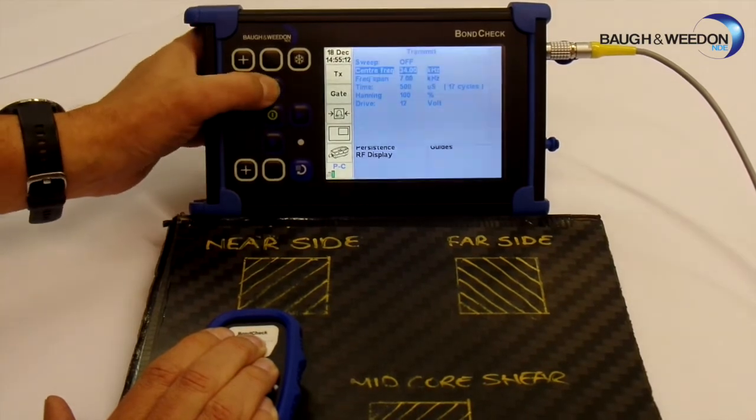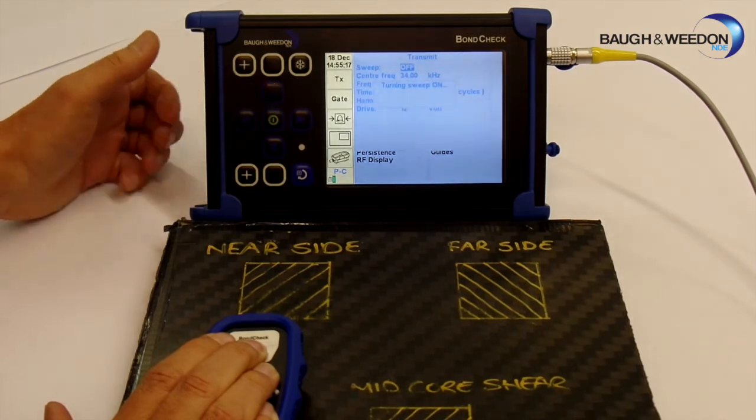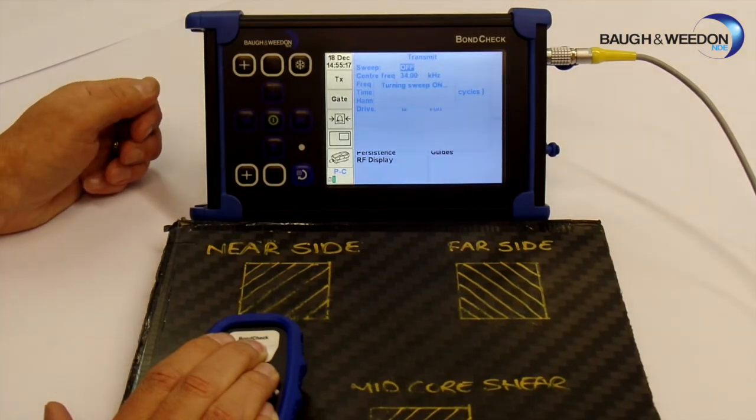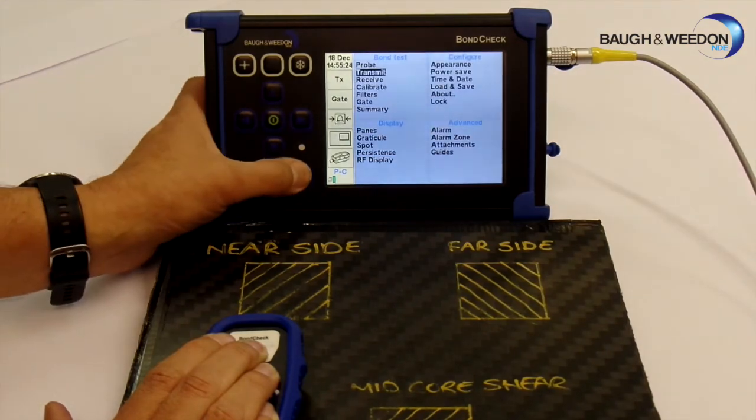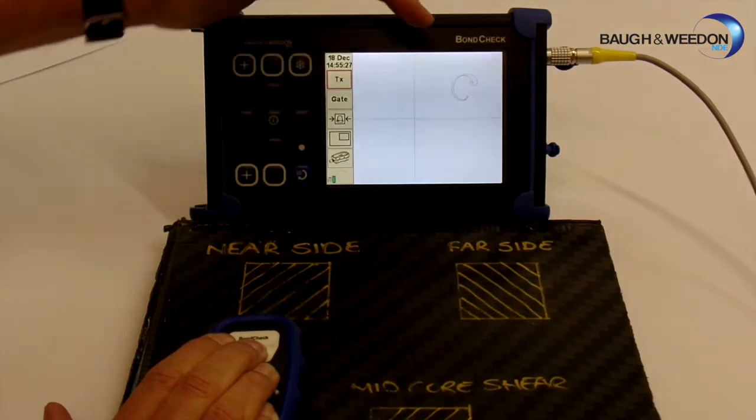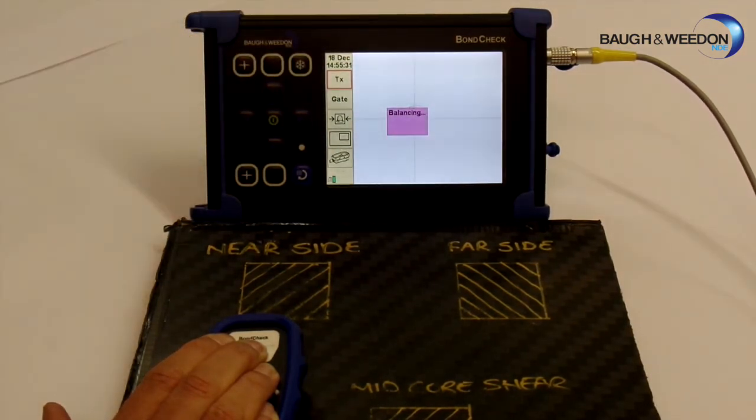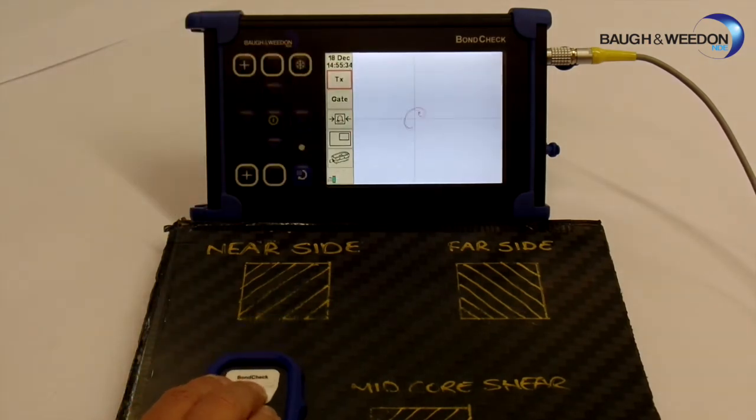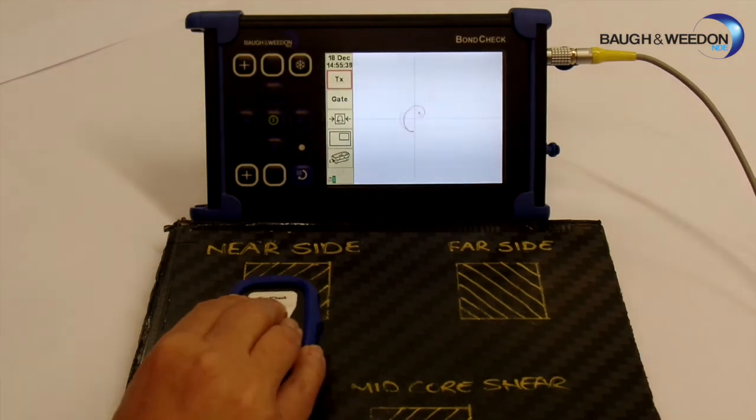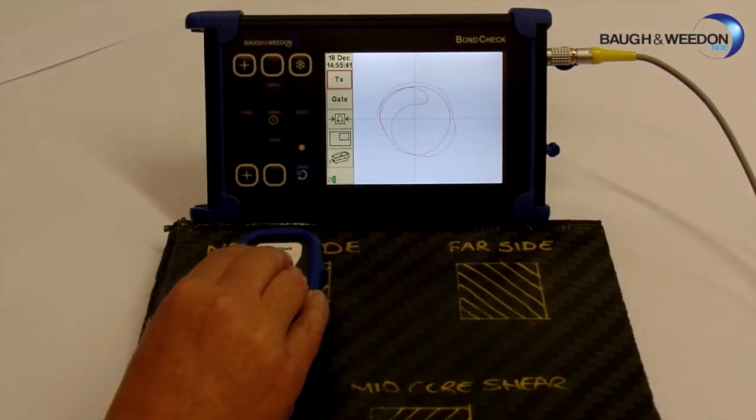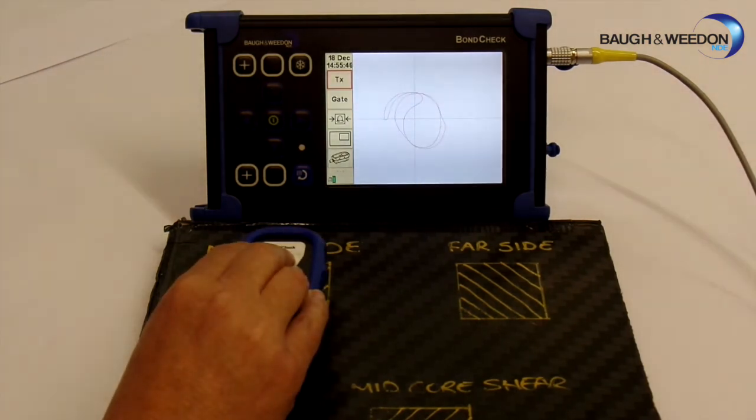So now select that, go up to sweep on and off, select it, turn sweep on. Sweep has now been turned on, we can come out of here. We're now going to the sweep display. You'll now see we've got a strange letter C appeared. If I balance it, we'll bring it back to the center of the screen. So now if we scan, it sort of does a bit of changing, but as we go over the defect, there's a huge change. Very obvious that we're on the defect.